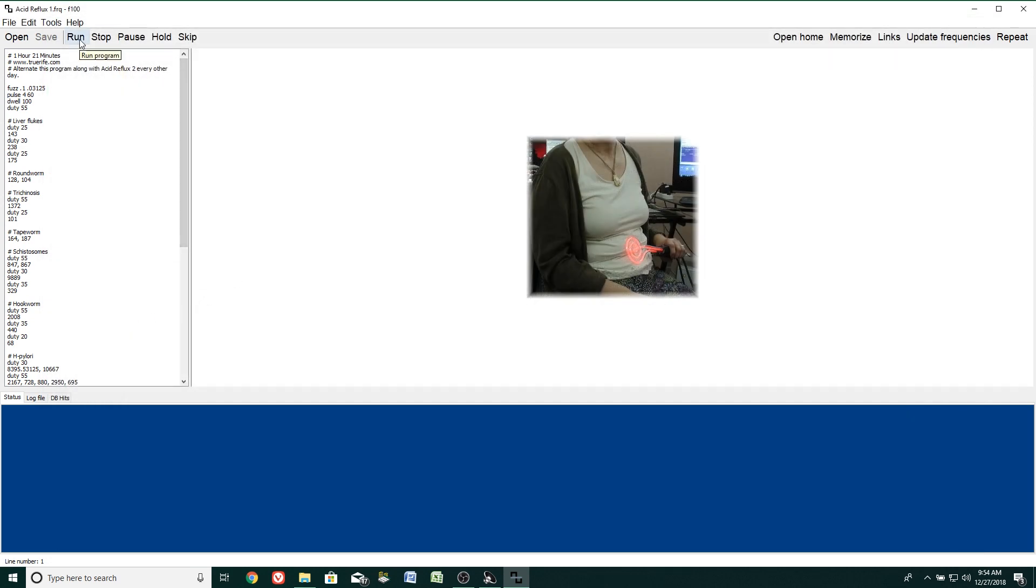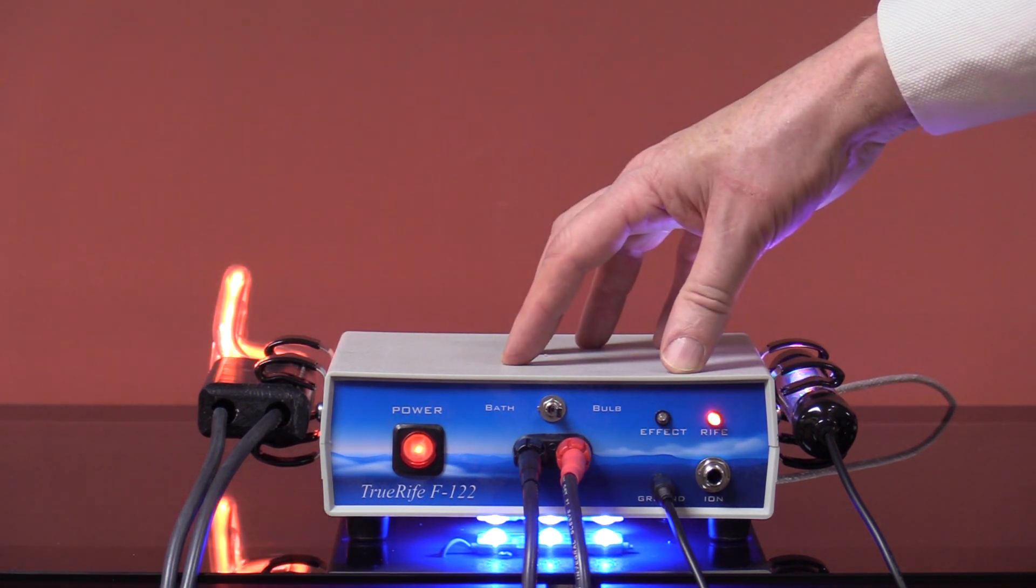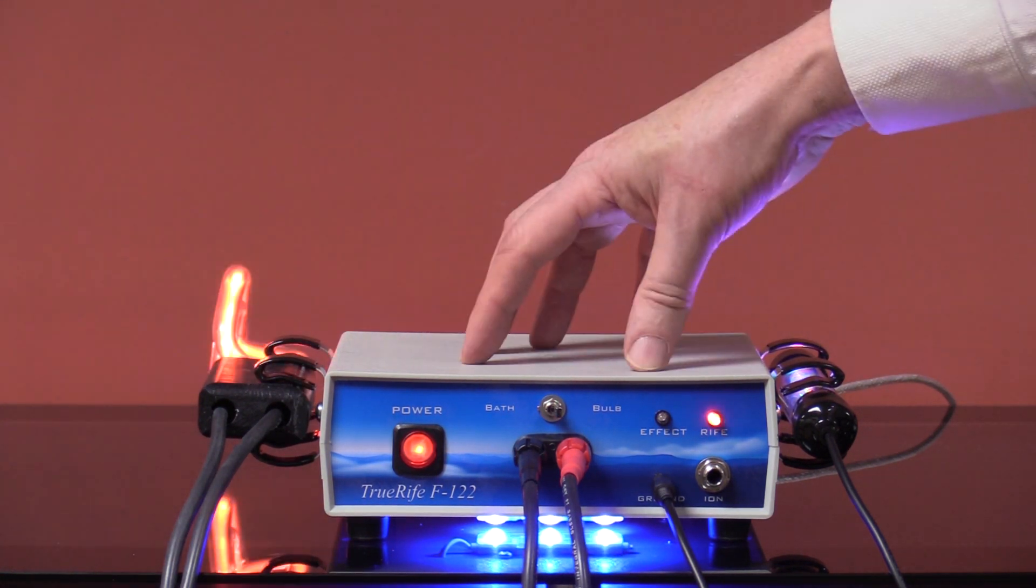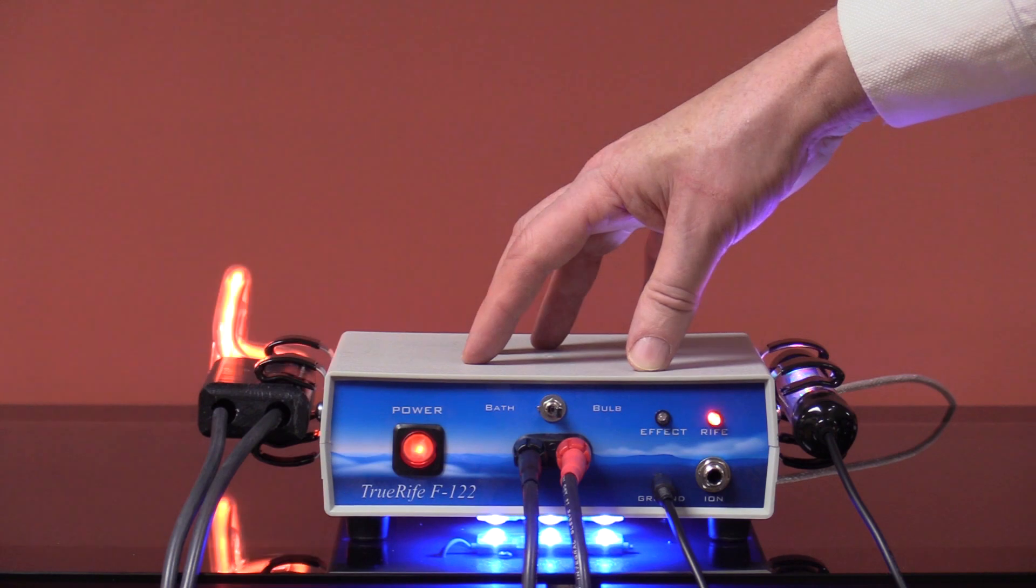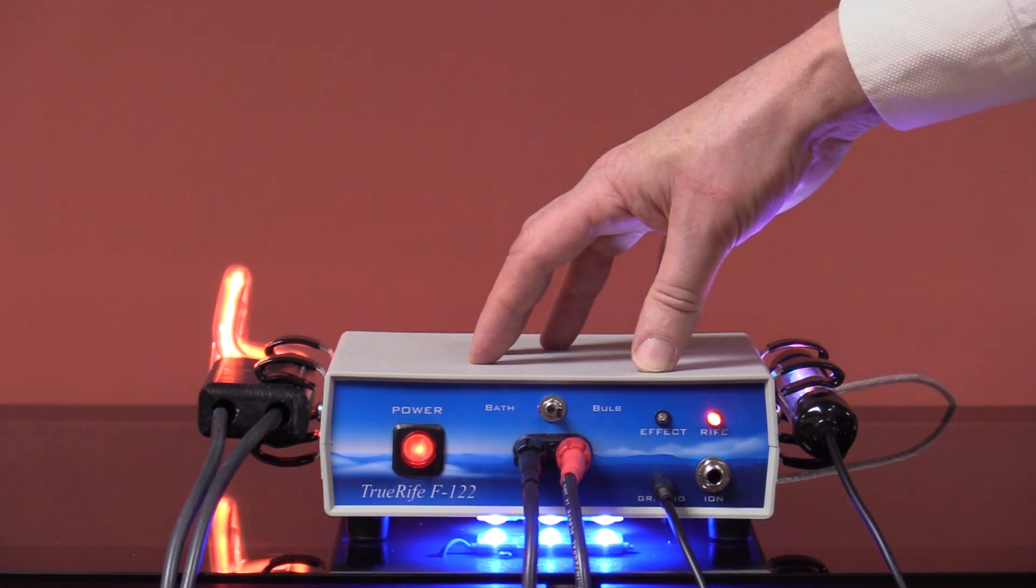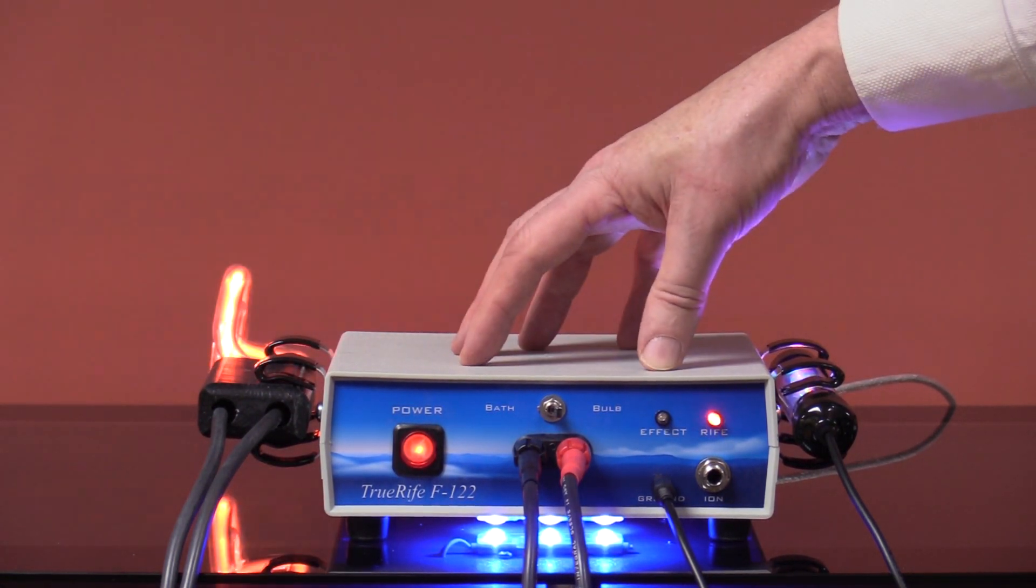Simply click the run button and notice what happens on the F-122. So we've sent the F-122 program acid reflux to the generator. It's actually running. There's a countdown going on in the software as well.